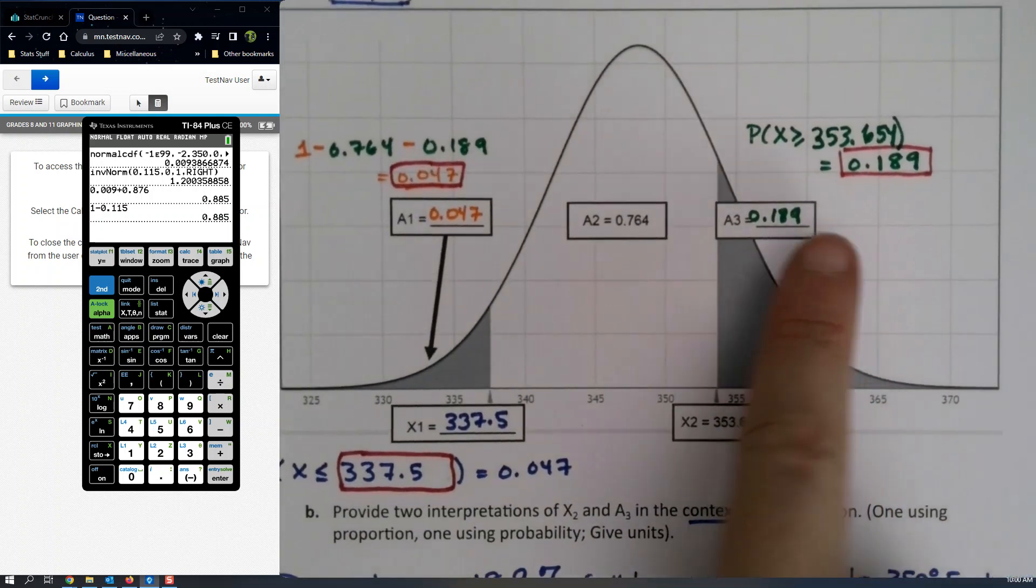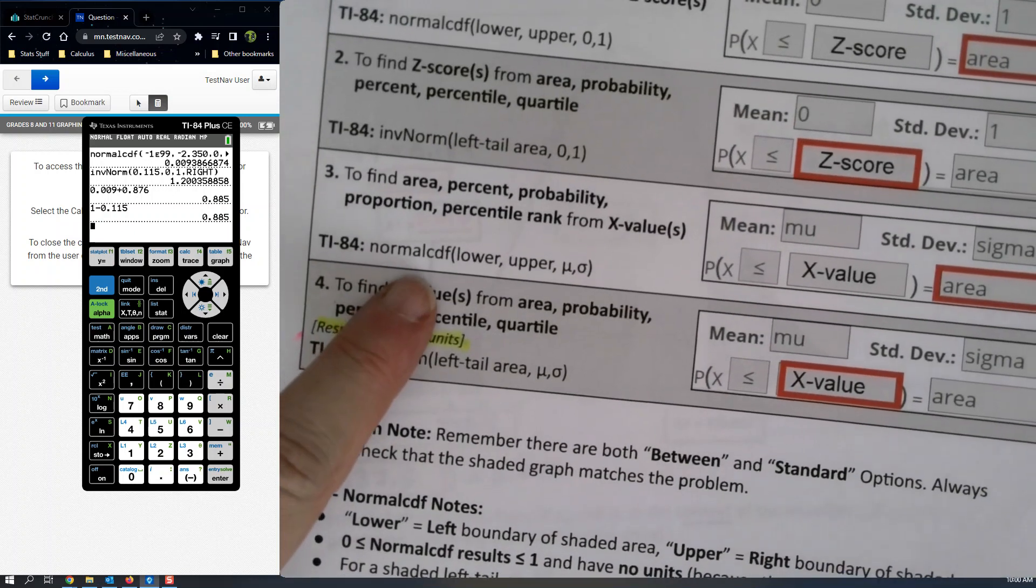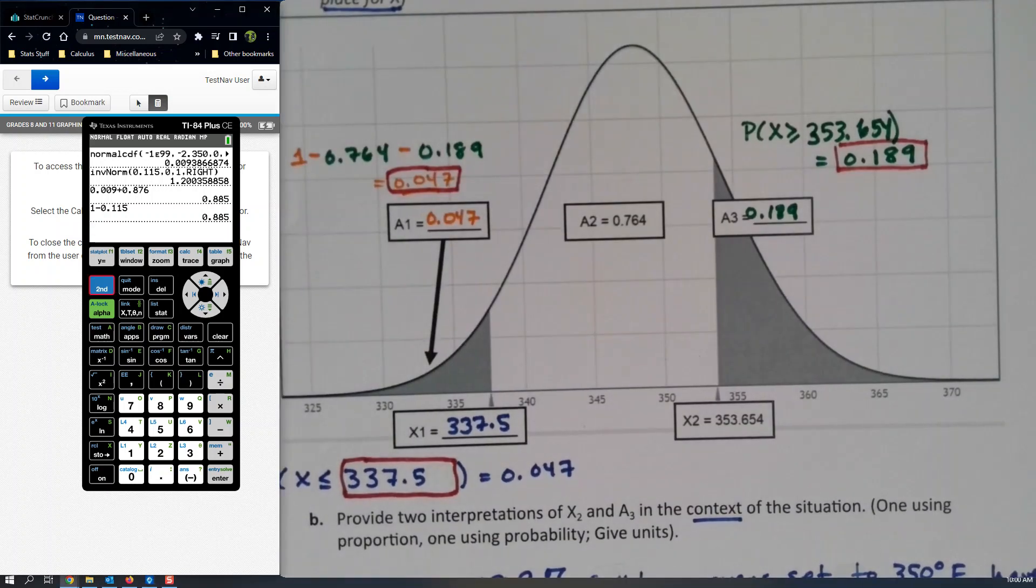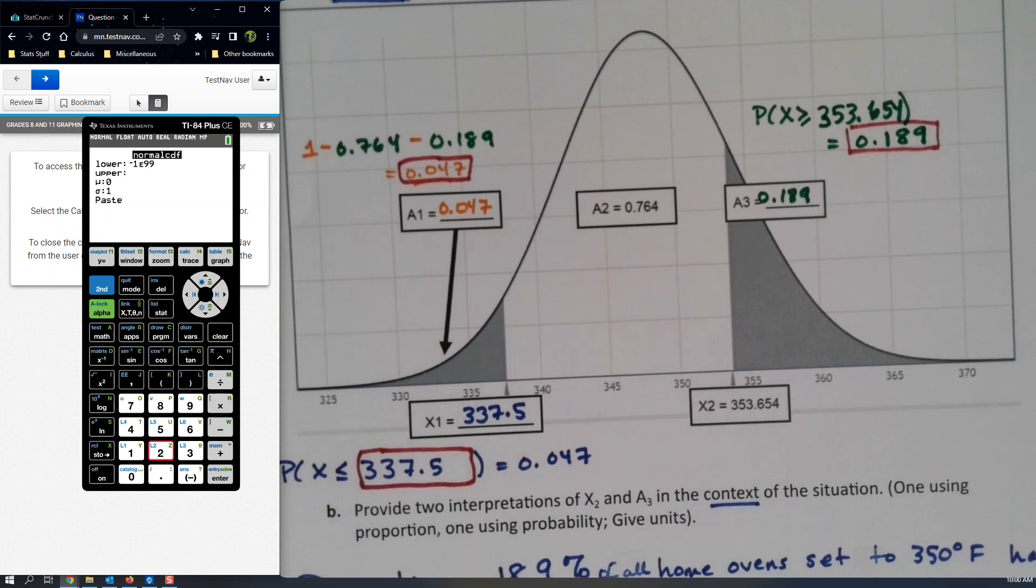Alright, TI-84 folks, so we want to find this value over here first. That was an area value, so that's a normal CDF question. You would say second, distribution, normal CDF. The left hand edge, the lower limit, is over here—it's 353.654. So we would type that 353.654.